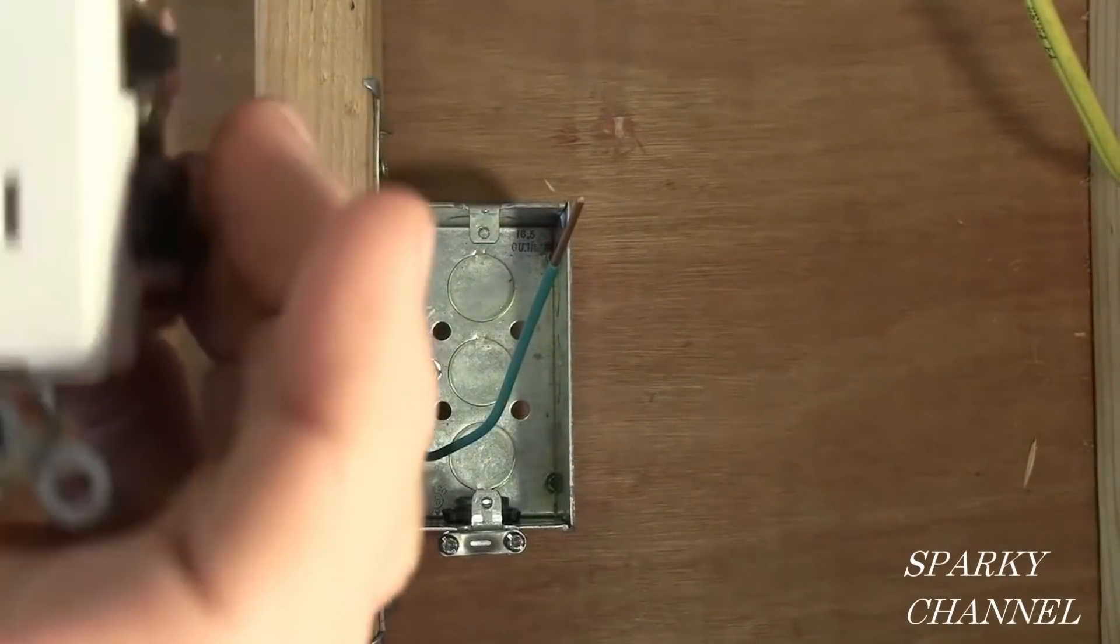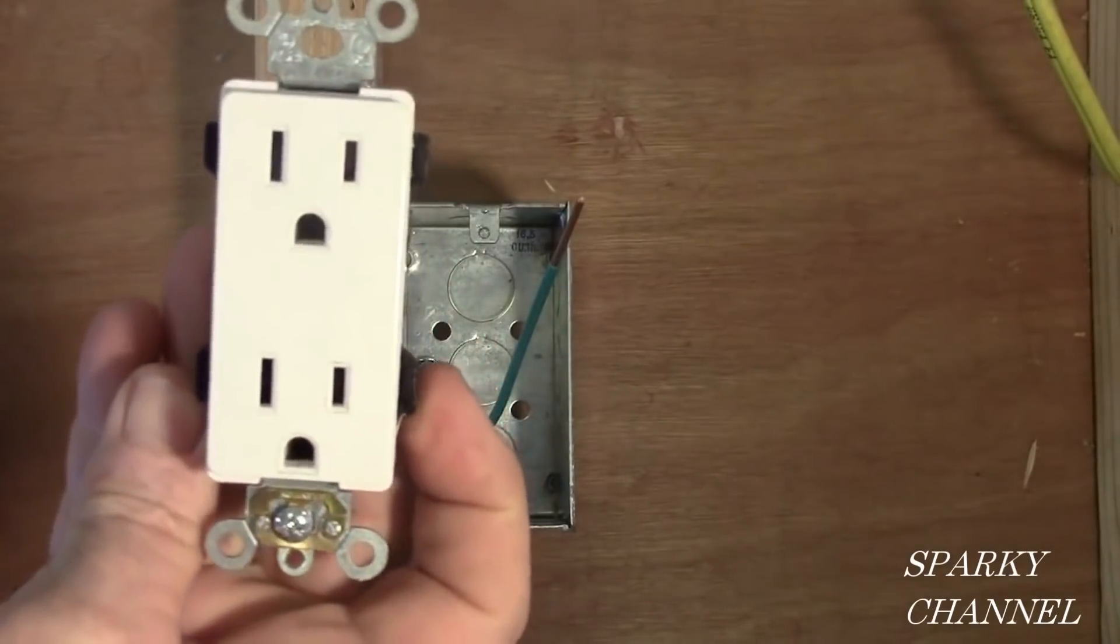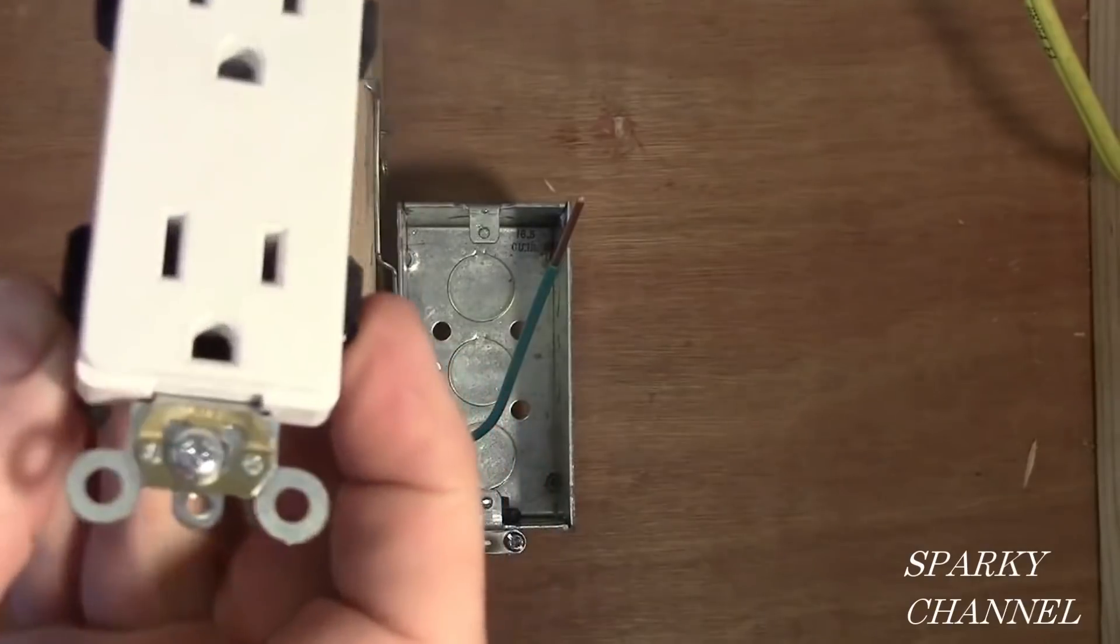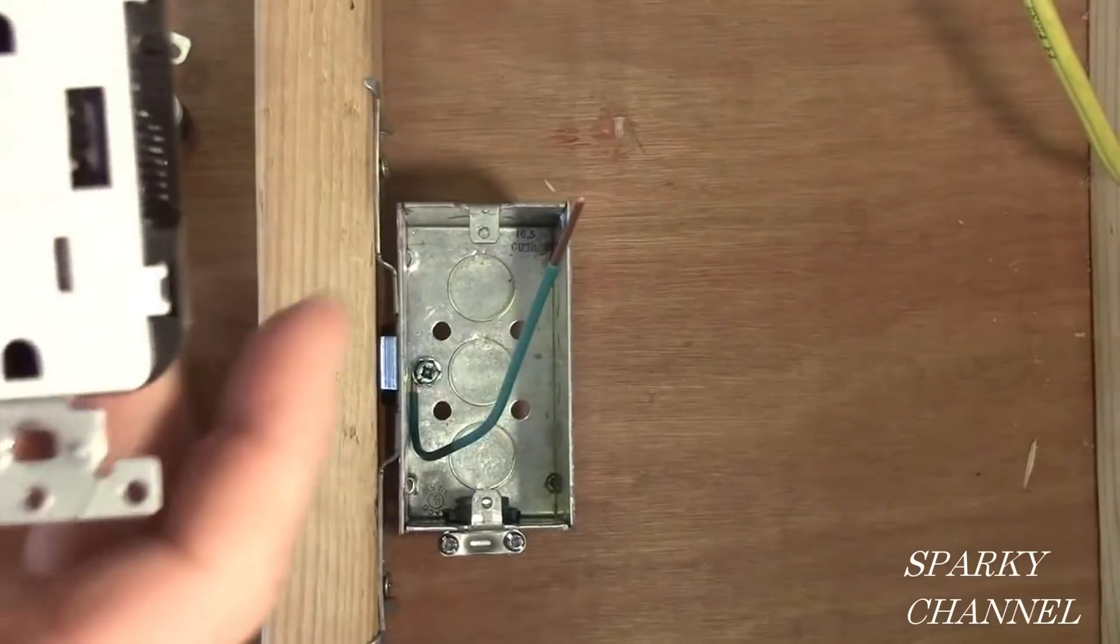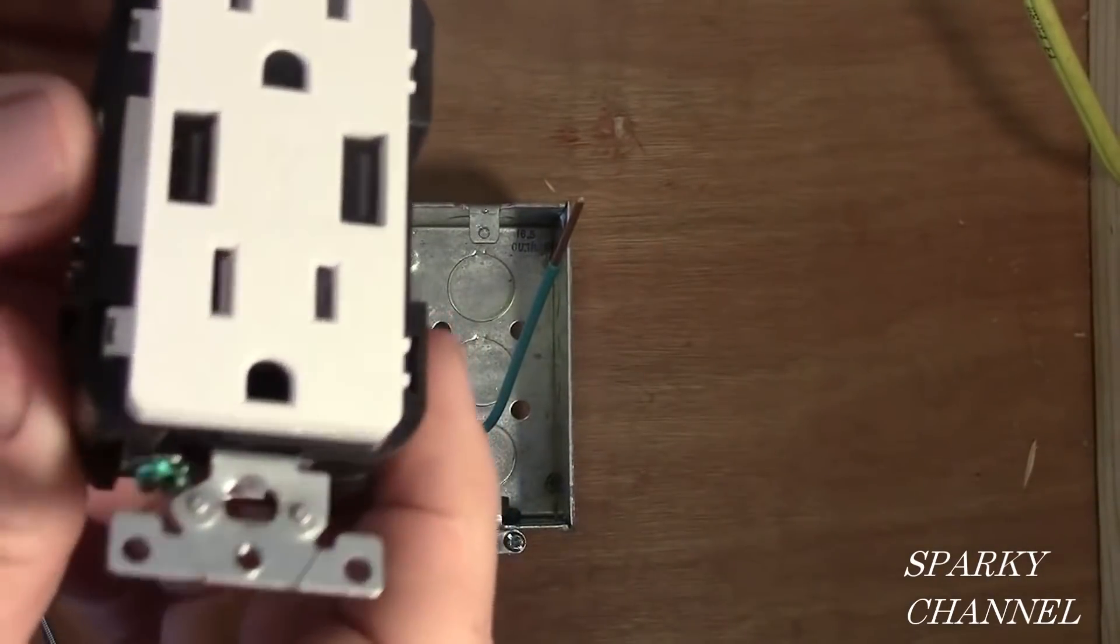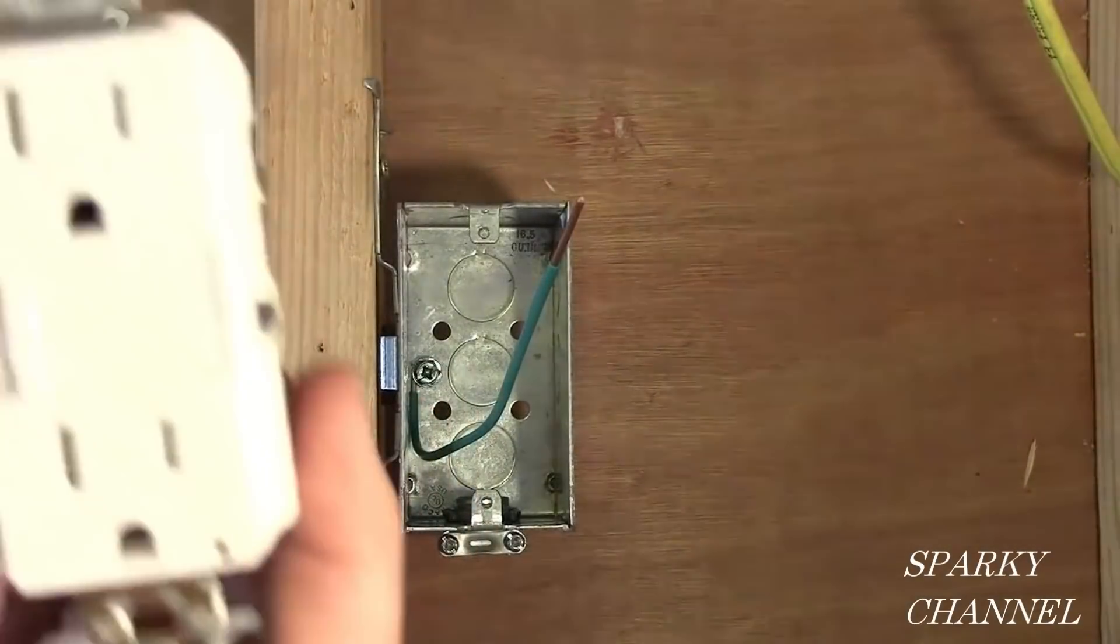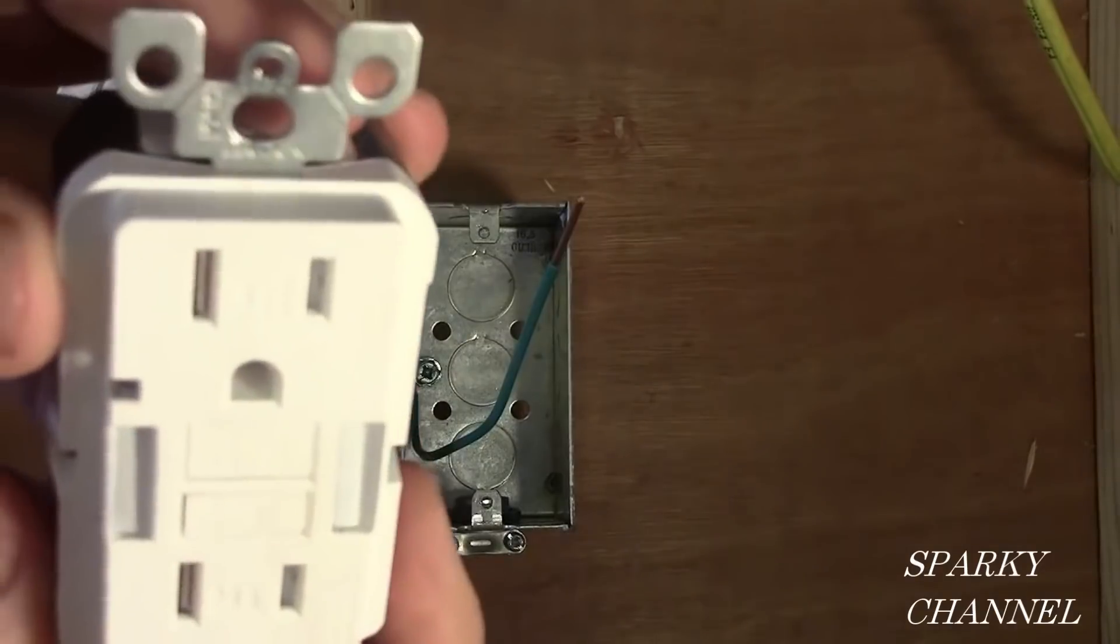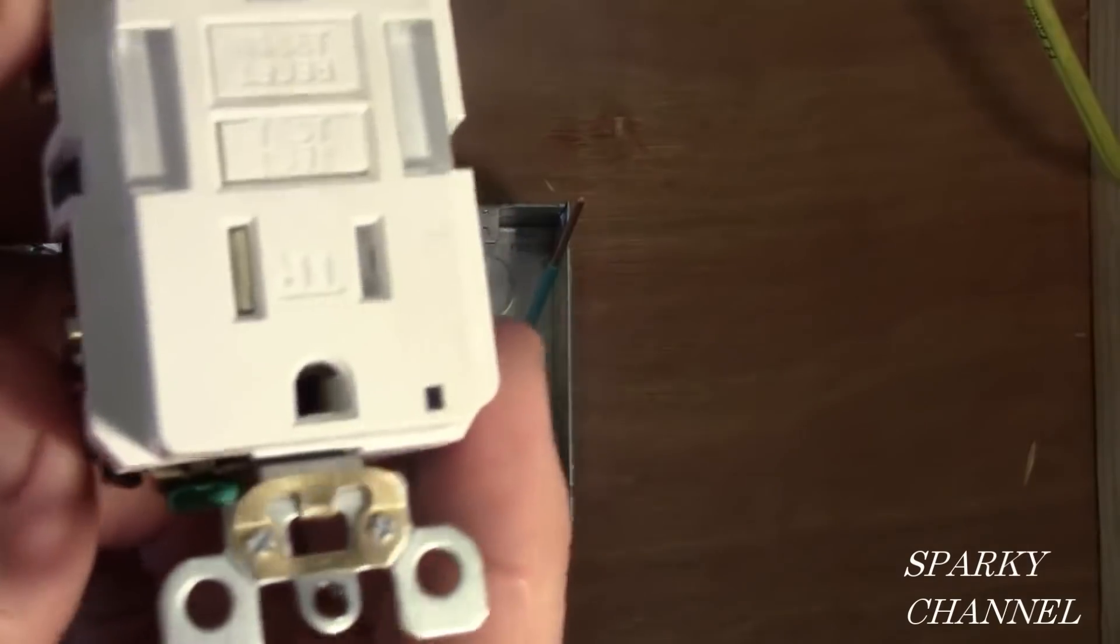You'll notice other devices have them also. This is a Decora Plus receptacle by Leviton. This is the new USB charging receptacle - you'll notice it doesn't have one. This is the Leviton GFCI with guide lights, and you'll notice it does have one.